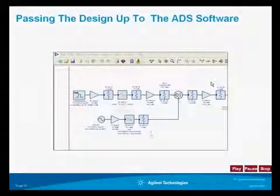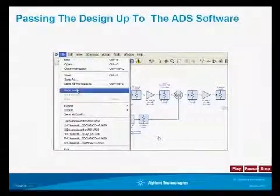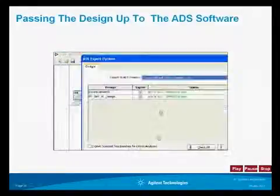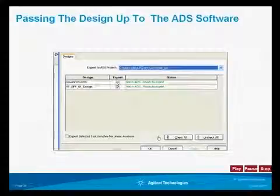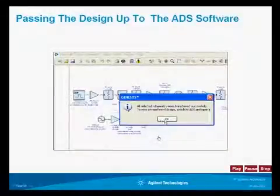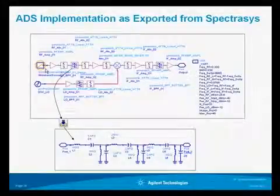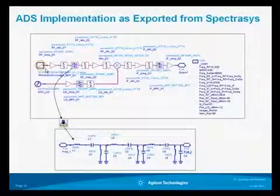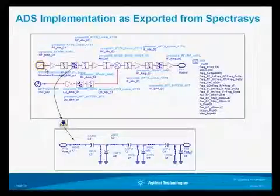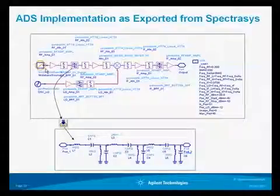The process for exporting up to ADS: this is our Spectrasys design with our broadband source. Go to File, Export, Schematic to ADS. It will point out that certain parameters will not export, such as the wideband source which does not have an equivalent. The resultant circuit in ADS is displayed — the broadband source shows up as a blocked-out icon and you can add your own source. The synthesized filter appears as a standard lumped element filter representation in ADS, with all equations passed over, making it very easy to pass designs up to the higher level.